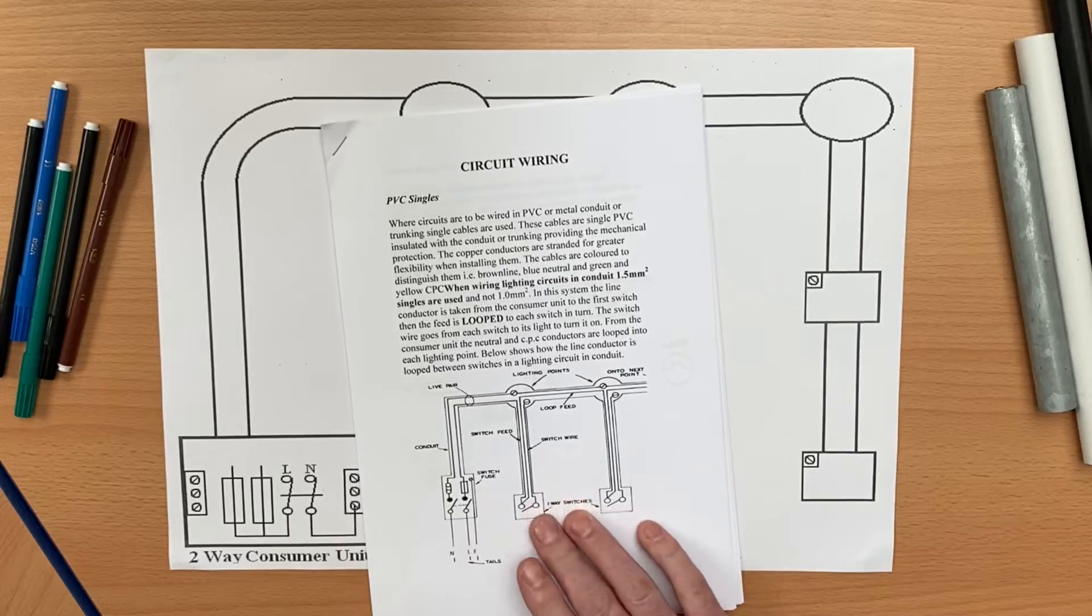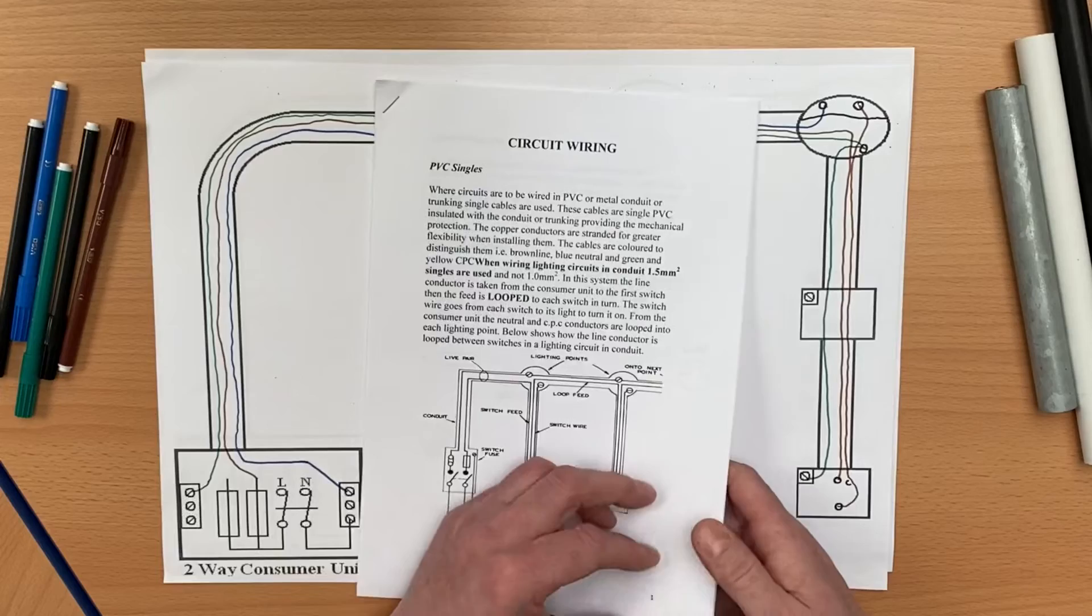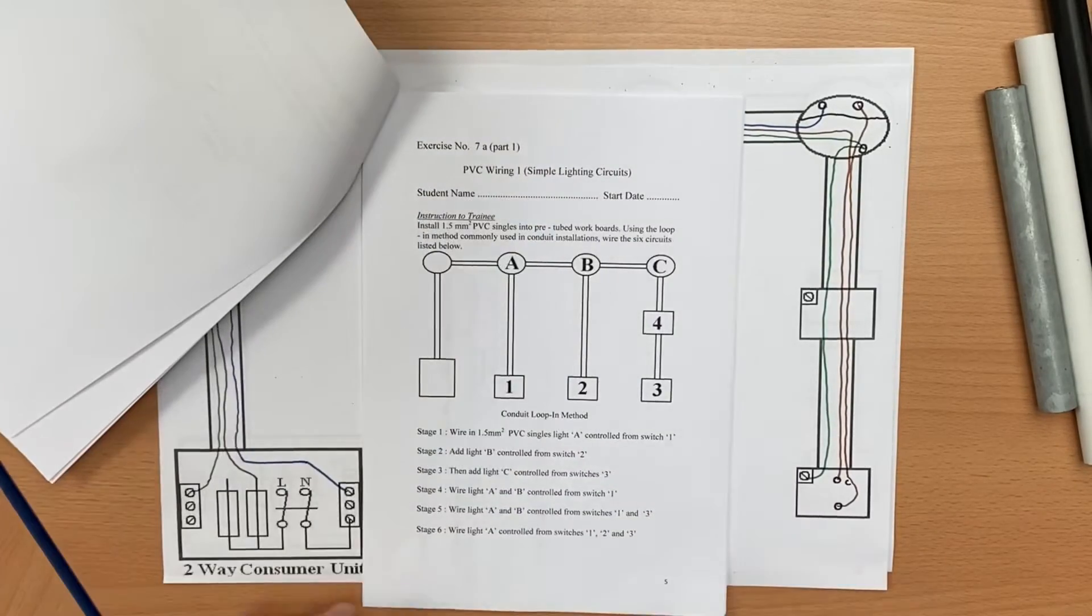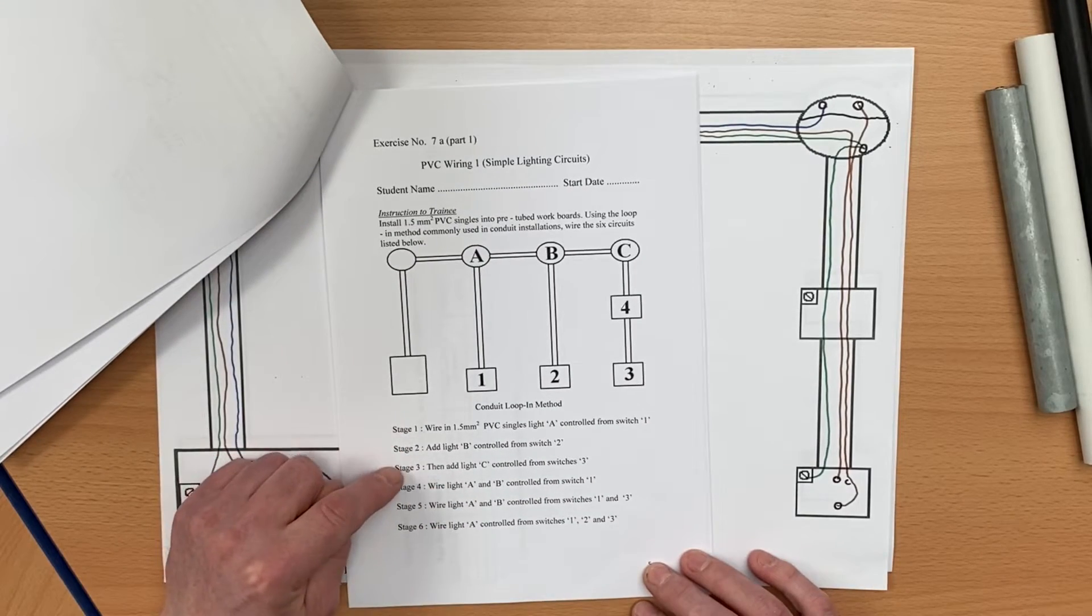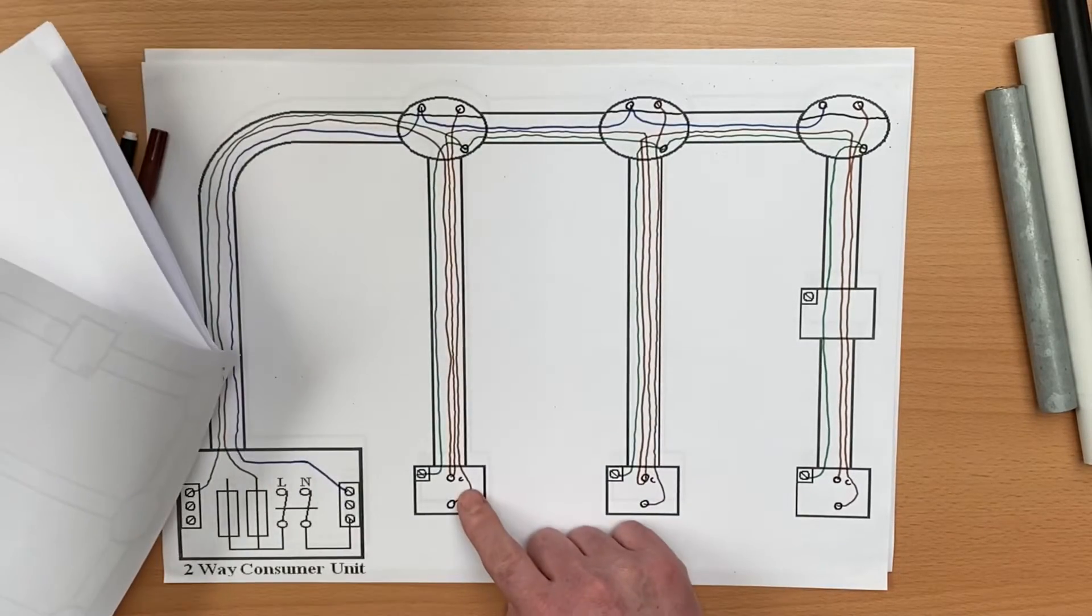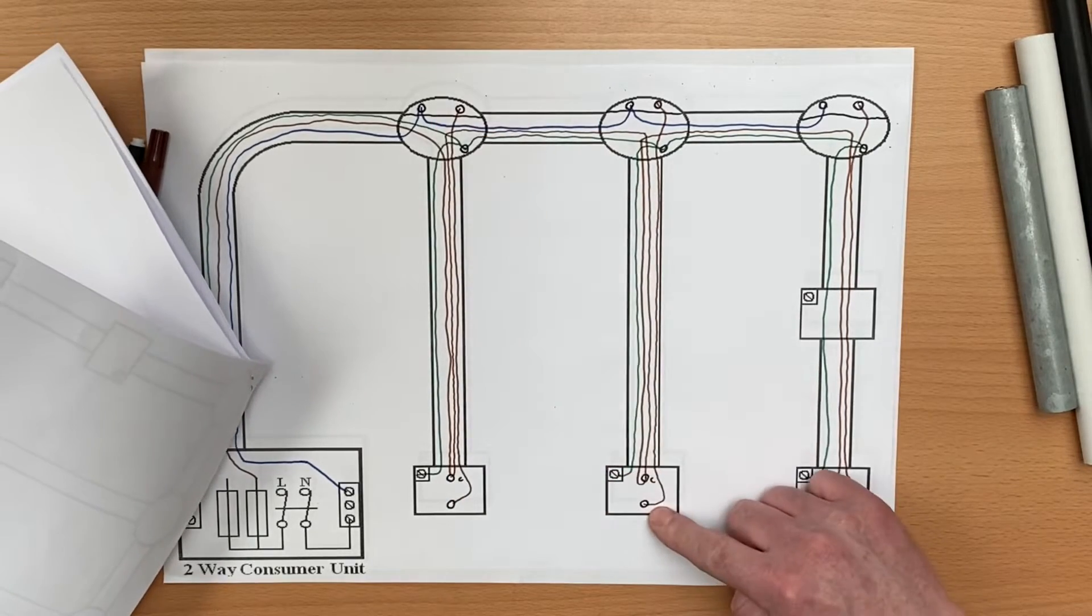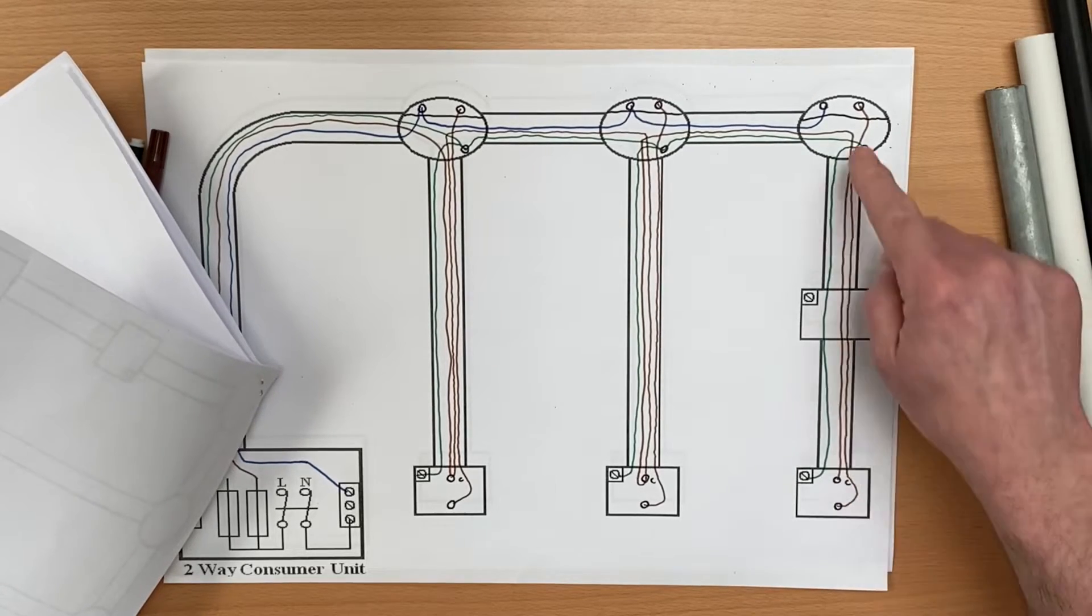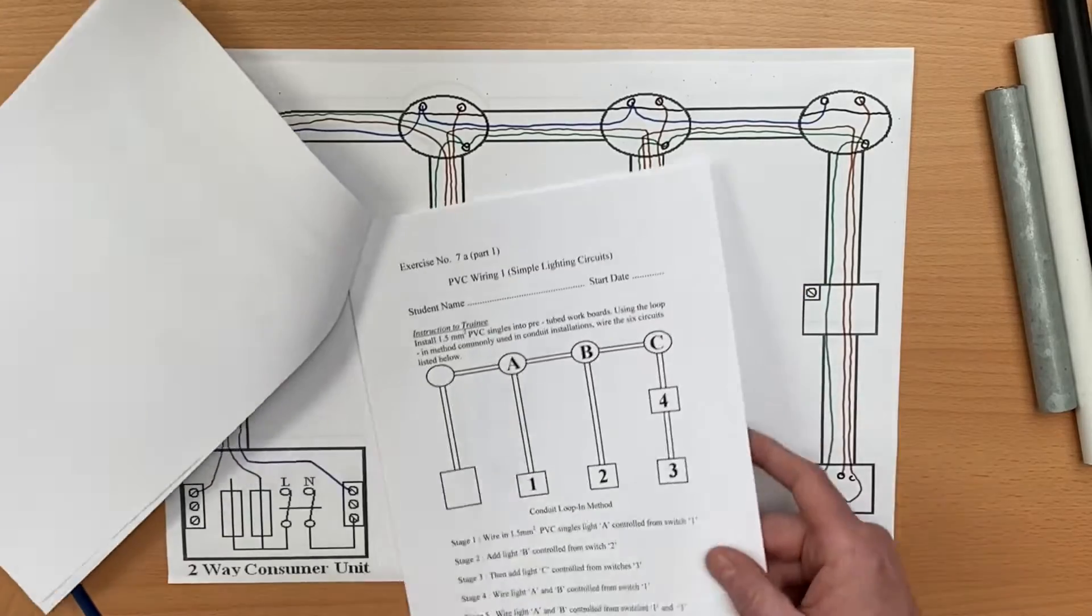In my previous video we produced the wiring diagram for this, which links to the exercise booklet. Here is the exercise: at stages 1, 2, and 3 you have the first switch controlling the first light in office 1, second switch controlling the second light in office 2, and the third switch controlling the third light in office 3. That's where we got up to.